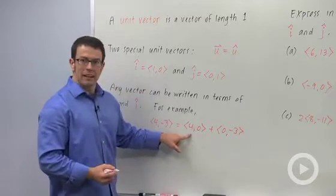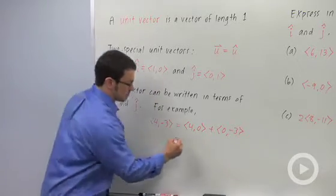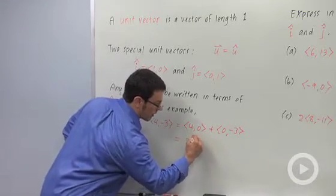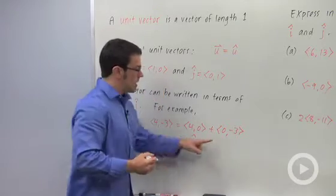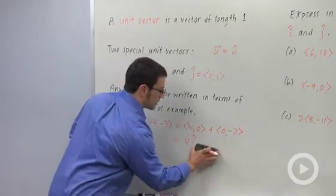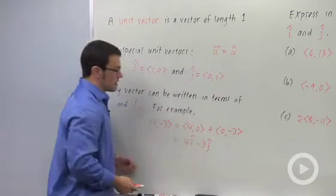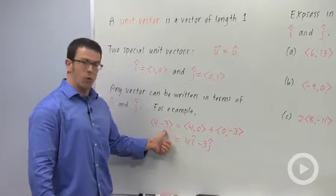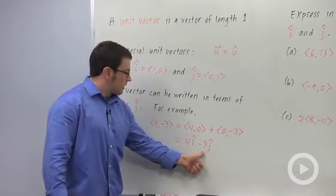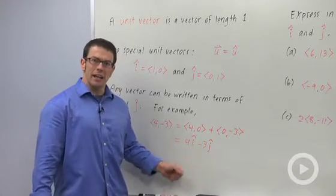And this is exactly 4 times i, 4 i hat plus, and this is negative 3 times j. I can actually write minus 3 j. So this is how you would write this vector, 4 negative 3, as a linear combination of the unit vectors i and j.